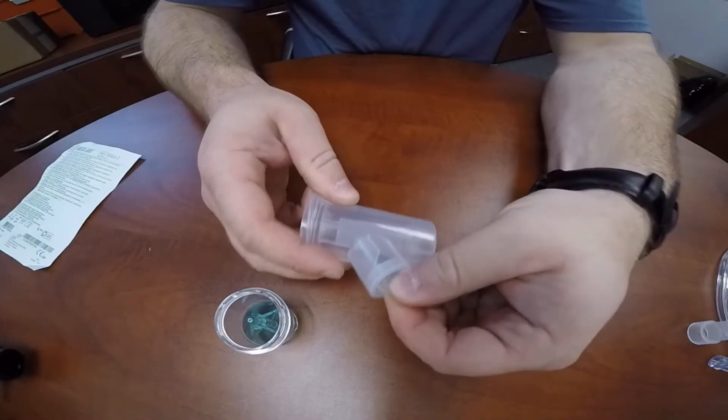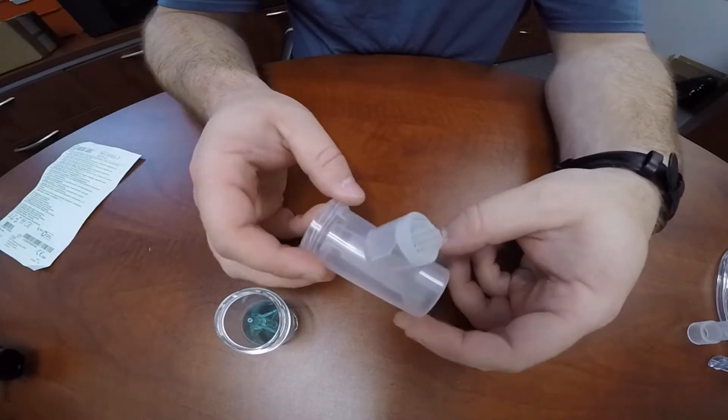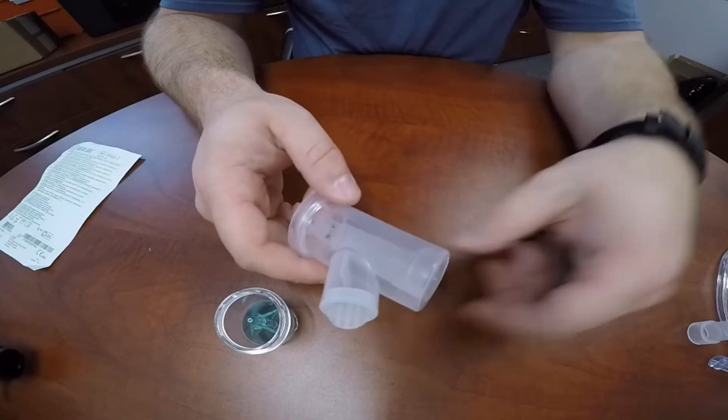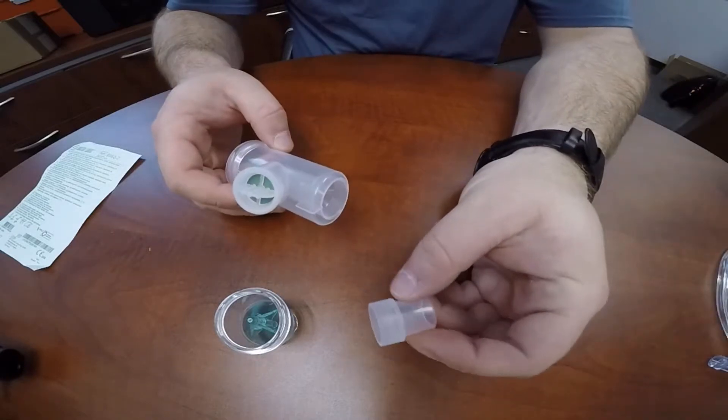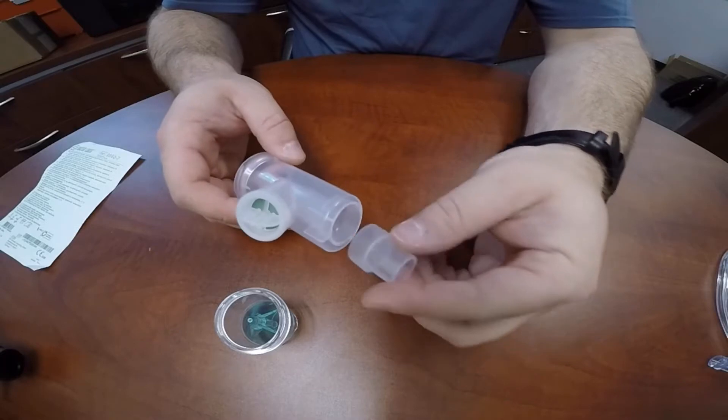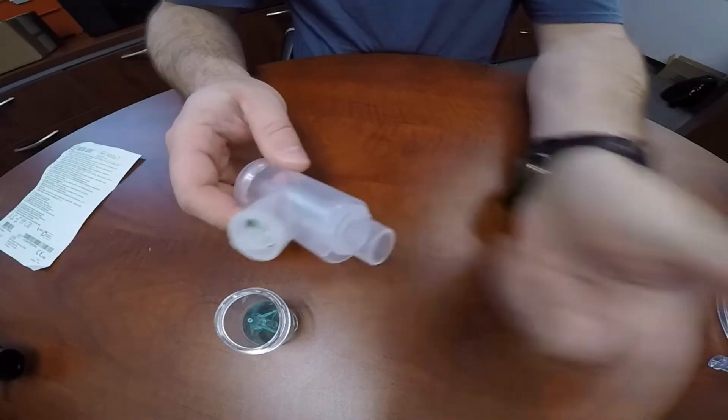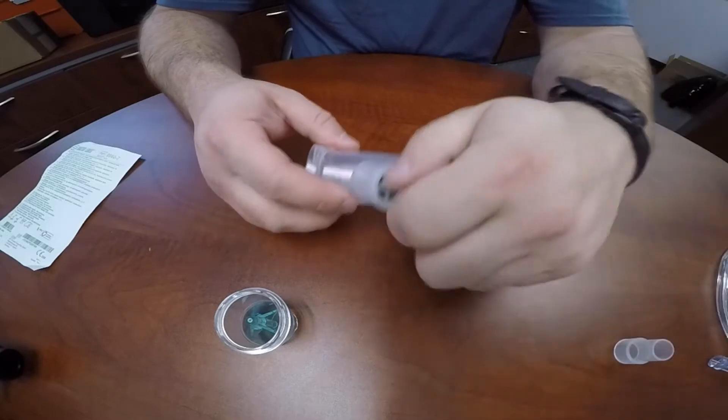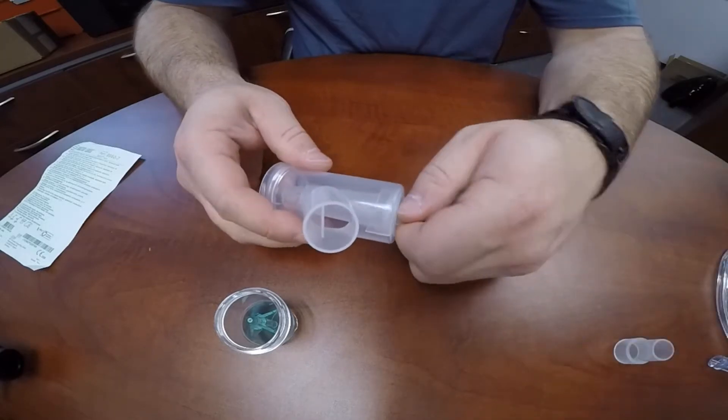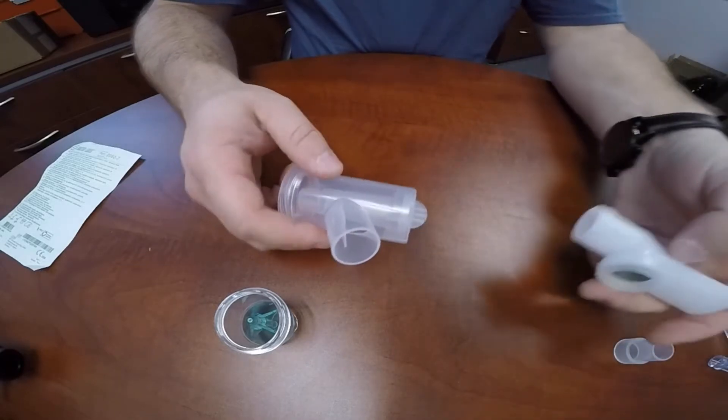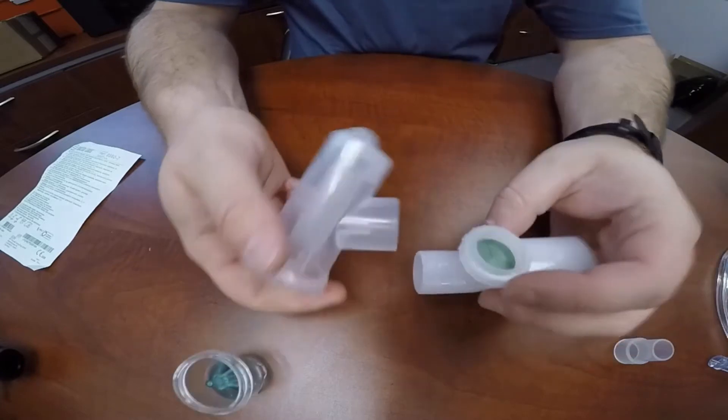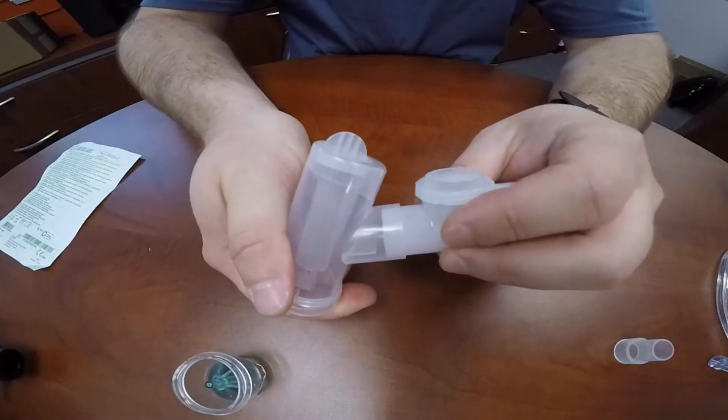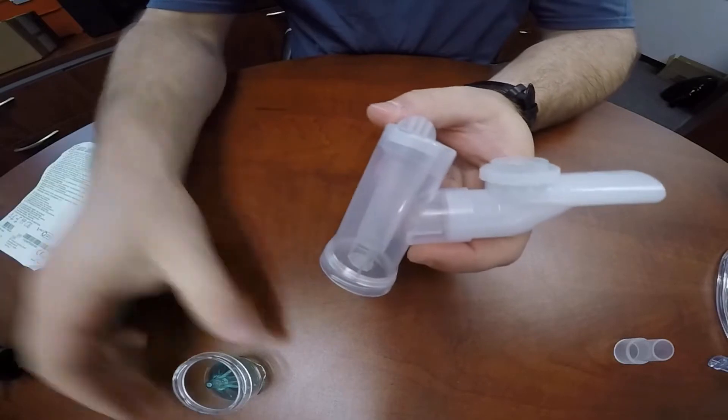The inhalation chamber can be moved from the top of the device to the mouthpiece port in order to use the mask adapter in order to attach this to a mask for patients that would require that. The inhalation chamber can be moved back and forth from the top of the device to the mouthpiece port.